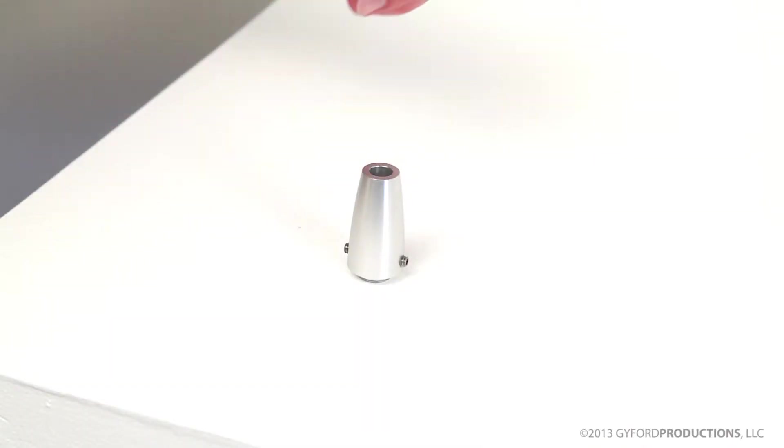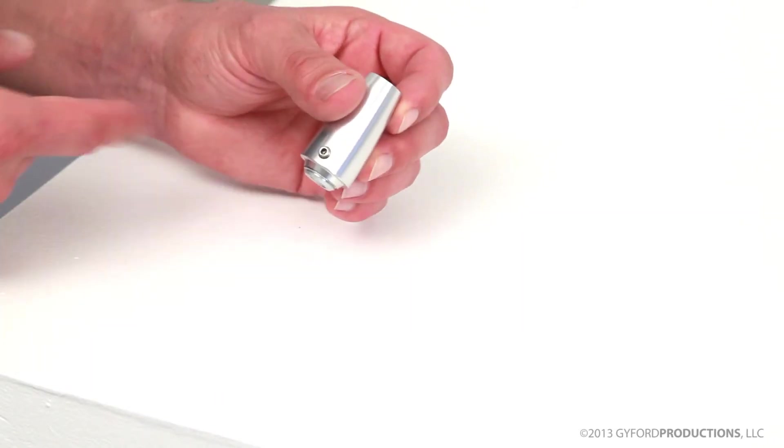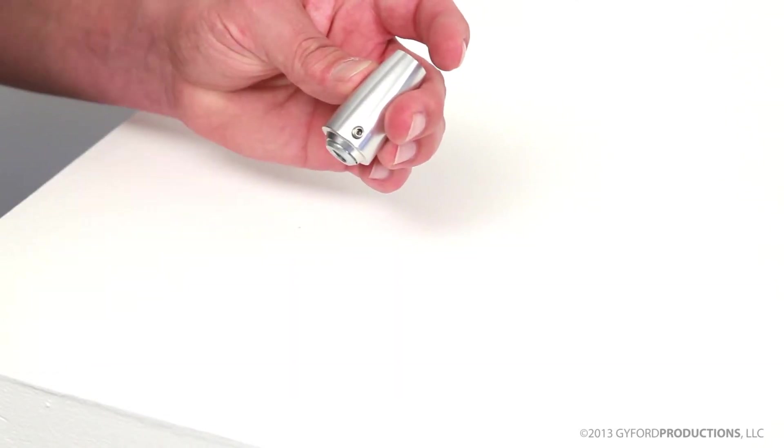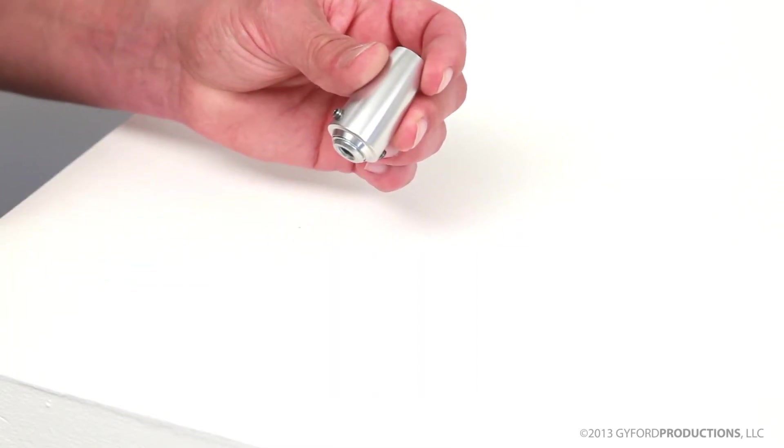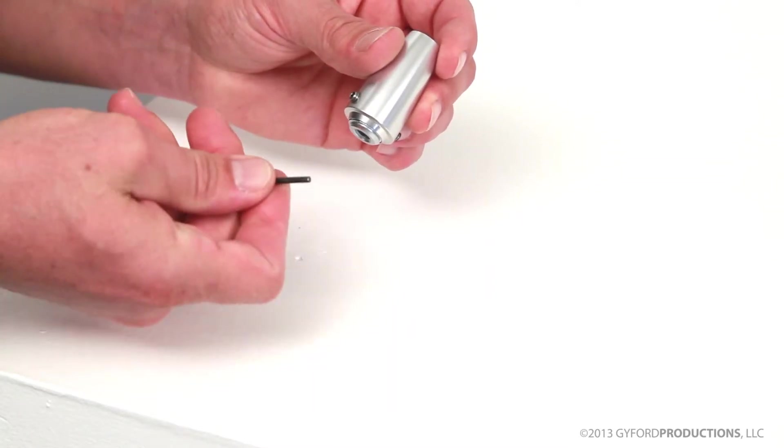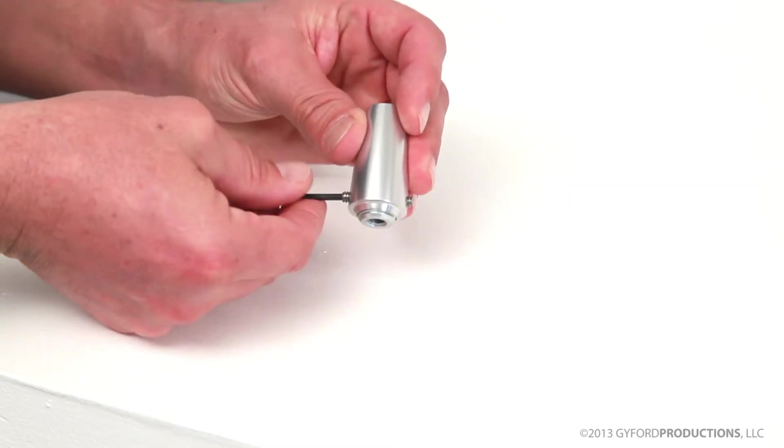Your easy turnbuckle will come assembled for shipping, but you'll need to take it apart before installation. You'll start by removing these set screws. Some turnbuckles have one and some have two. Take a 3/32 Allen wrench and remove those. Careful not to lose them, they are small and can run away from you.